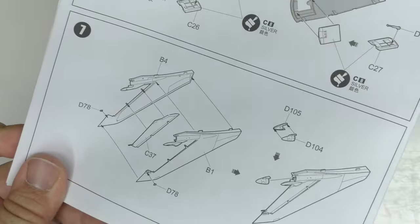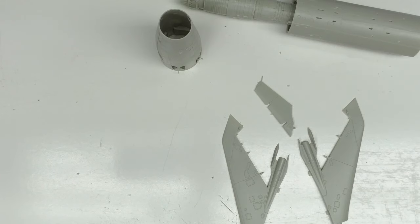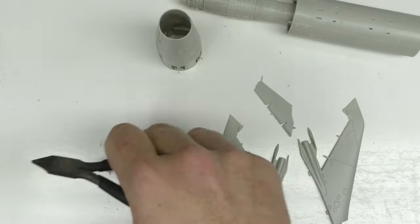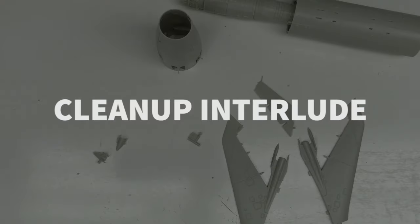This is one that really likes to spread it around on the sprue trees. We've got parts from B, C, and D going on the tails here. D104 and 105. There we go.